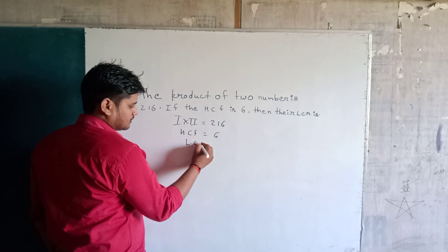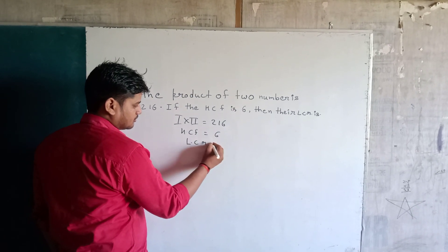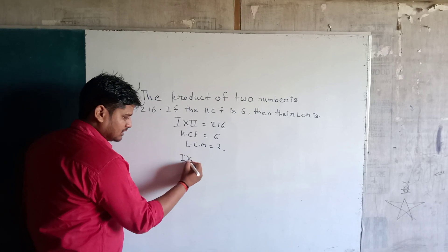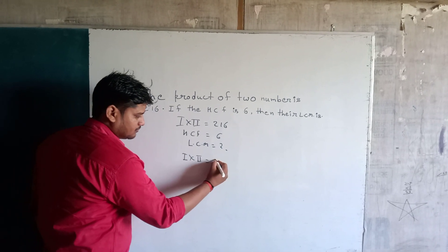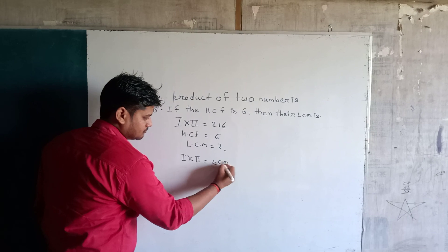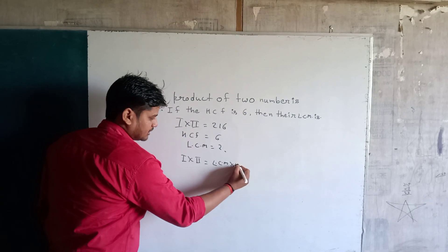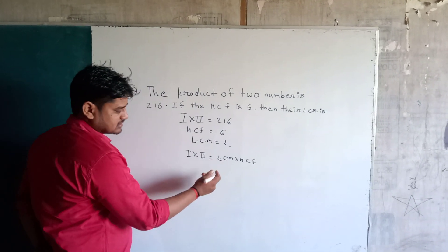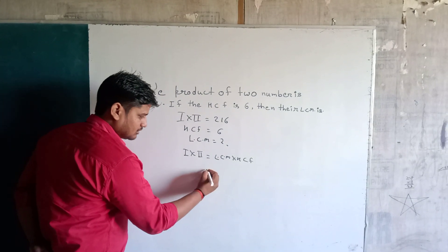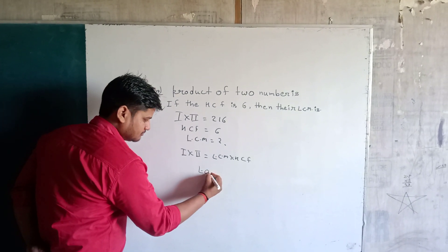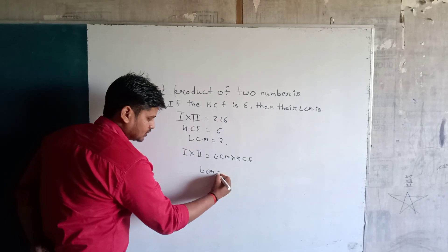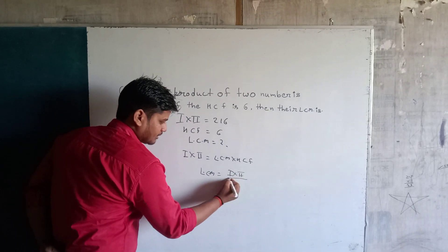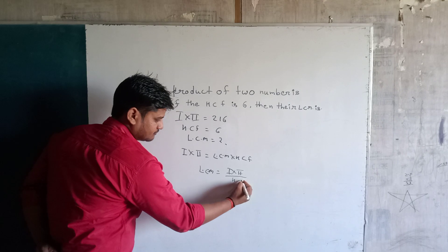The formula is: First Number × Second Number = LCM × HCF. So LCM equals First Number multiplied by Second Number divided by HCF.